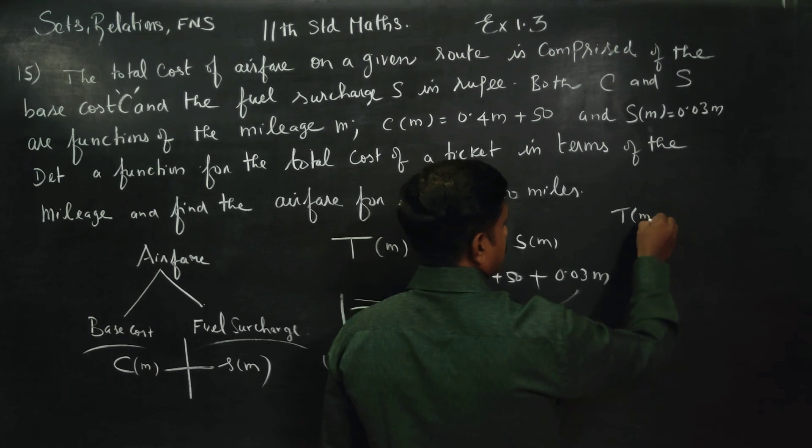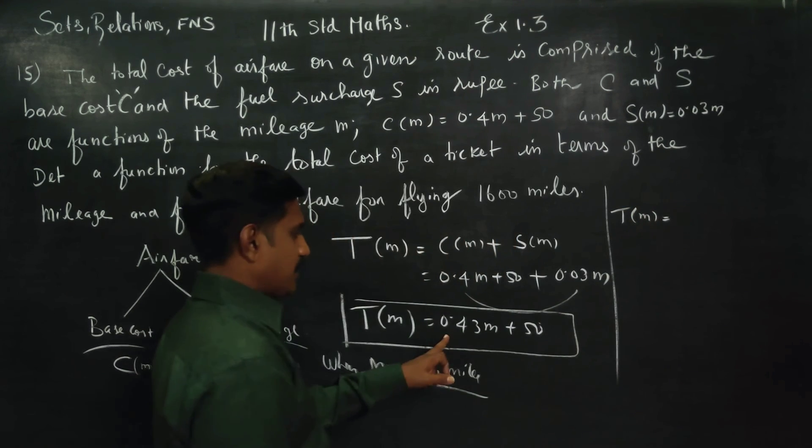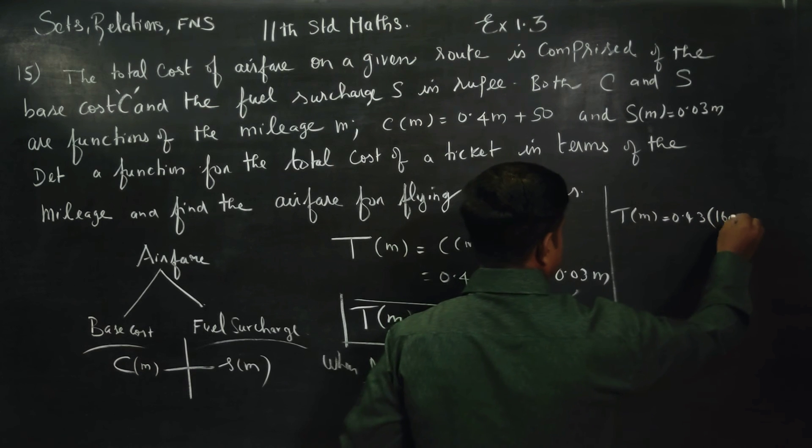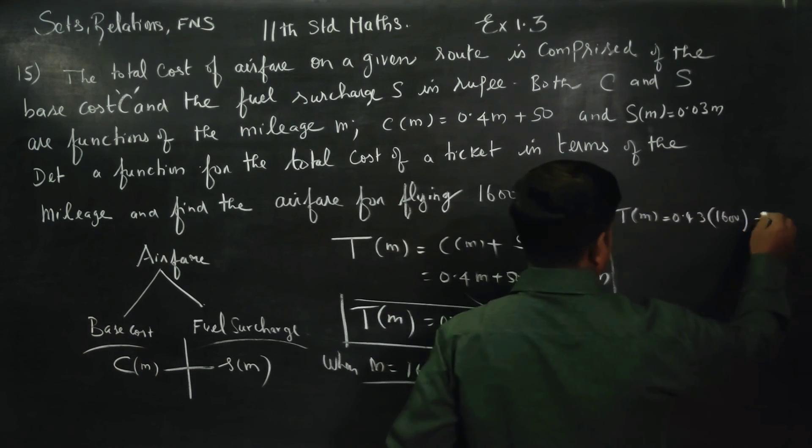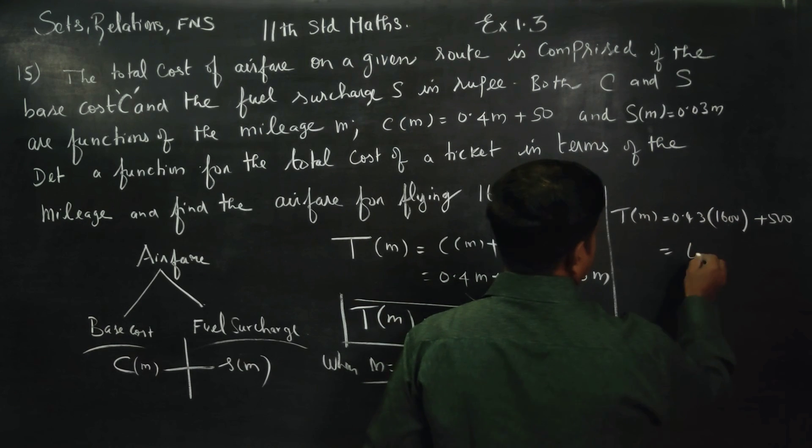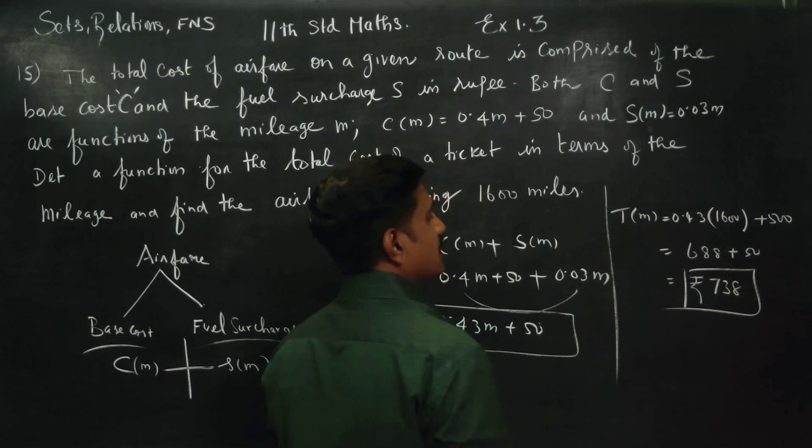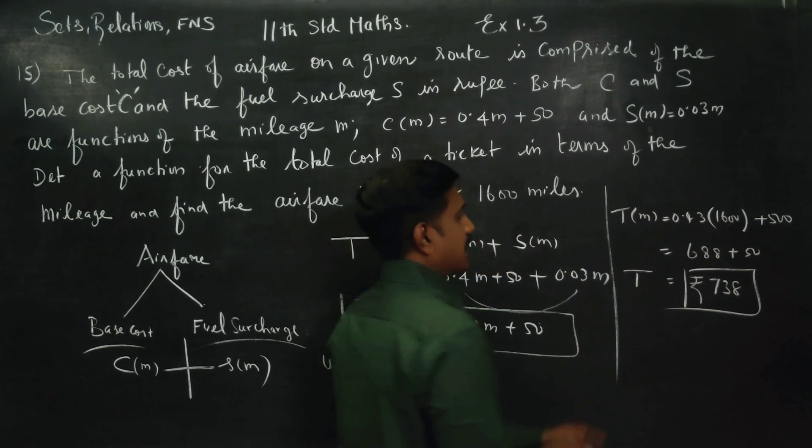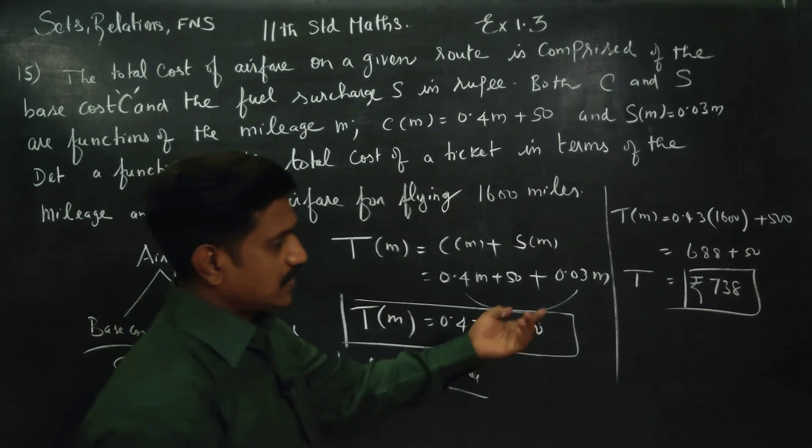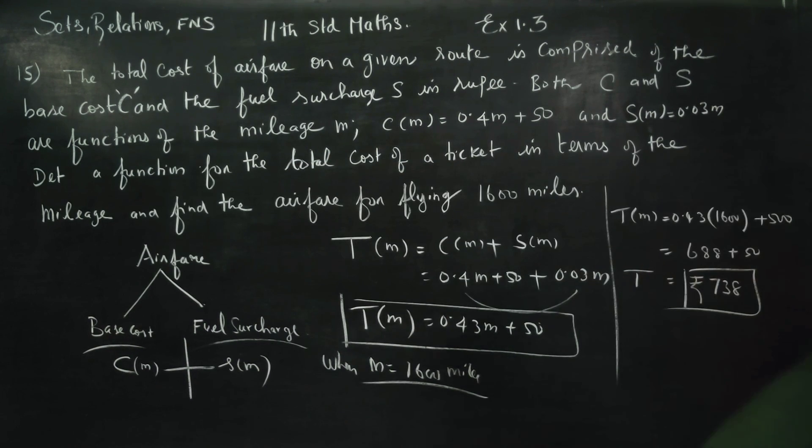Total cost will be T of M equals 0.043M plus 50. For 1600 miles, this equals 738 rupees. It is very cheap.